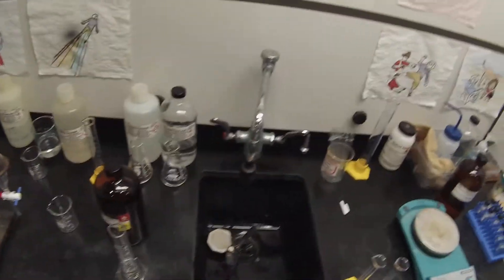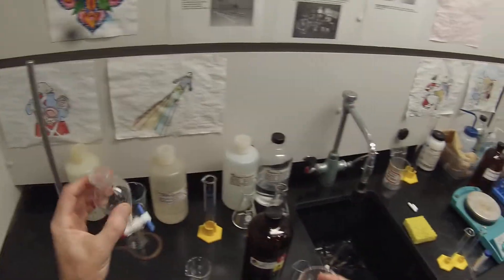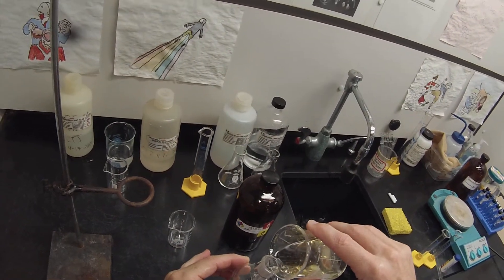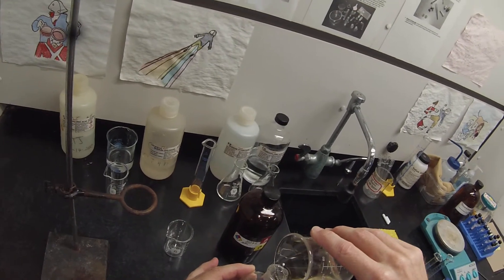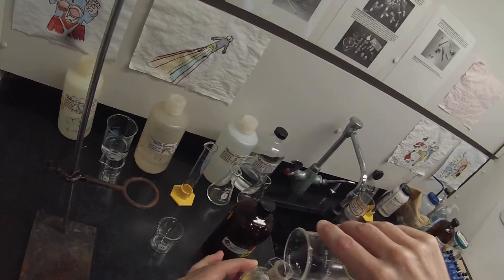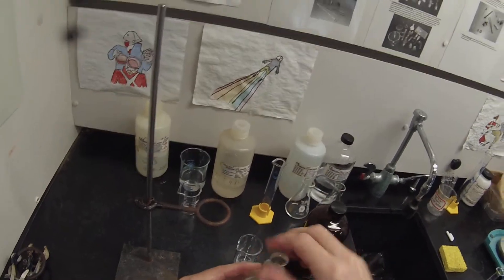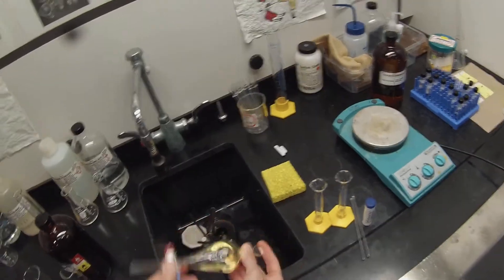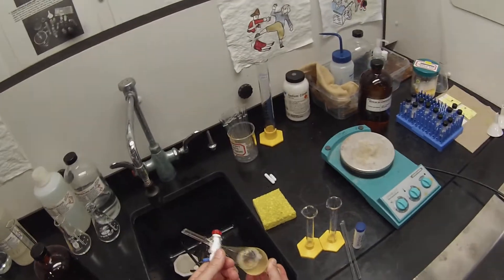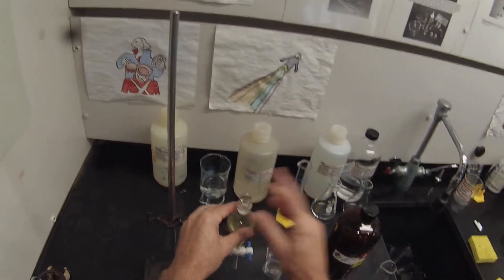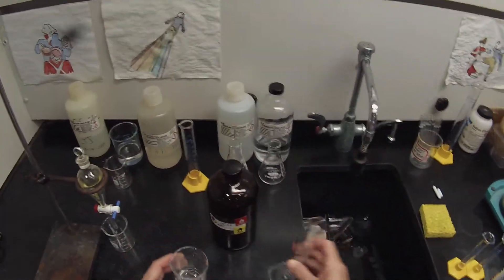You can take that stir bar out, be careful not to let it end up down the sink. We can transfer this to the separatory funnel. It's really not necessary for me to mix those layers significantly in the separatory funnel since they've already mixed pretty well while stirring, but I'm going to shake them around a little bit anyway. There's no pressure being released, which we wouldn't expect.